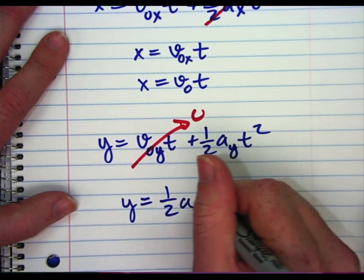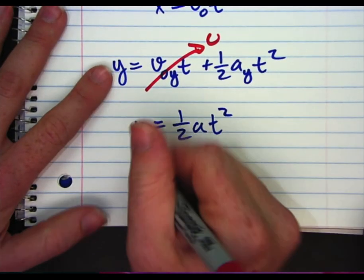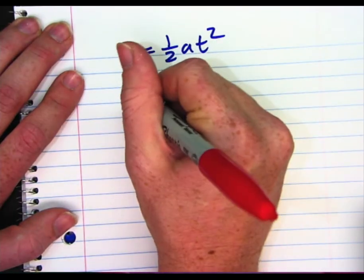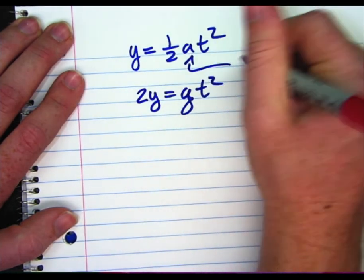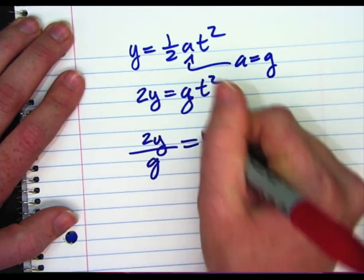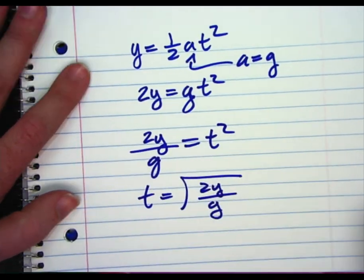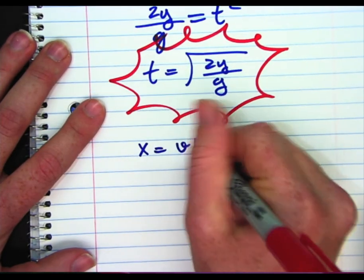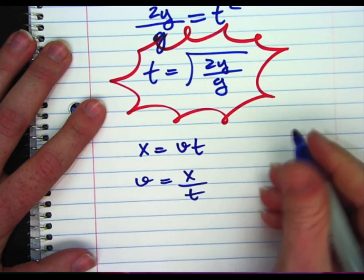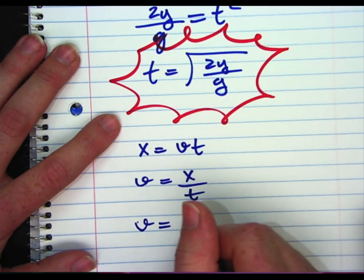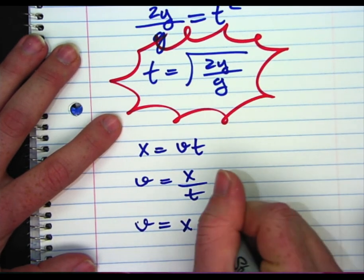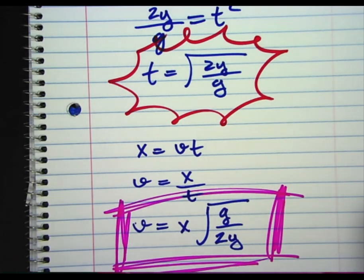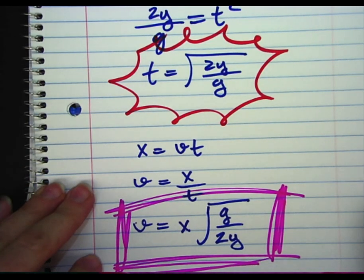Now, using the Y equation, we solve for t: t equals the square root of 2Y divided by g. We then substitute this into the X equation to solve for the initial velocity of the ball: V initial equals X over t, which gives us V equals X times the square root of g over 2Y.